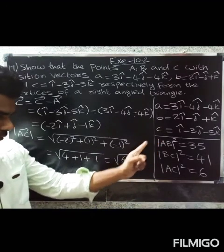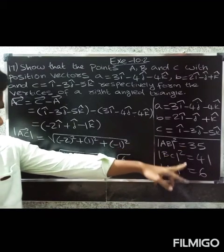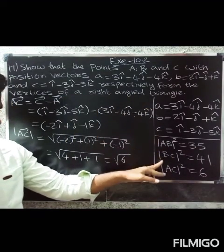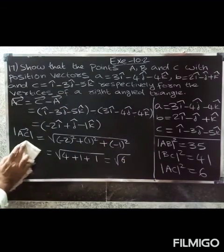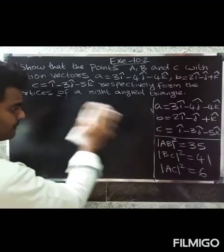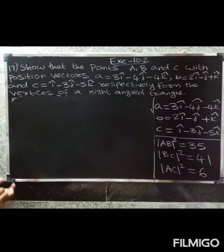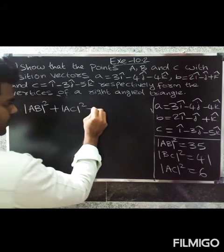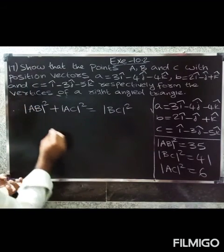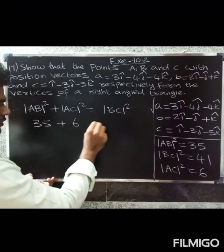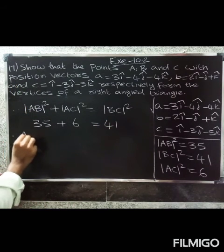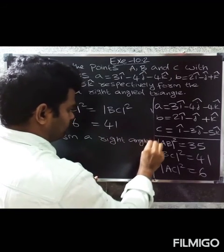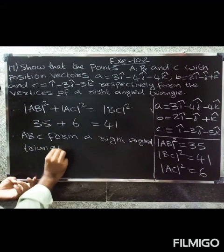Now applying the right-angle triangle condition: modulus of AB squared plus modulus of AC squared equals modulus of BC squared. That is, 35 plus 6 equals 40 (approximately 41). Therefore, ABC forms a right-angle triangle. Thank you.